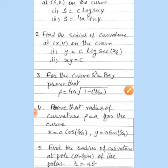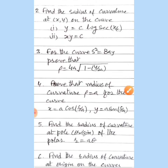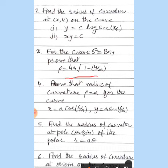Third: for the curve x² = 8ay, prove that ρ = 4a√(1 − y/(2a)). Use dy/dx (which gives the tangent) and ds/dθ (which gives ρ), and calculate the value of ρ = 4a√(1 − y/(2a)). Fourth: prove that the radius of curvature ρ = a for the parametric curve x = a·cos(s/a), y = a·sin(s/a). Work it out using the parametric method as previously explained.